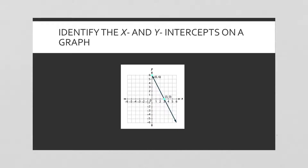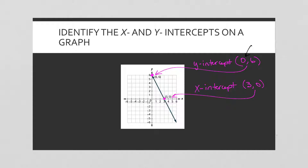Take a look at where those two blue dots are — I'll go over them in pink. The y-intercept is at (0, 6), and the x-intercept is at (3, 0). The important thing to notice is that on the y-intercept, x is 0, and on the x-intercept, y is 0.